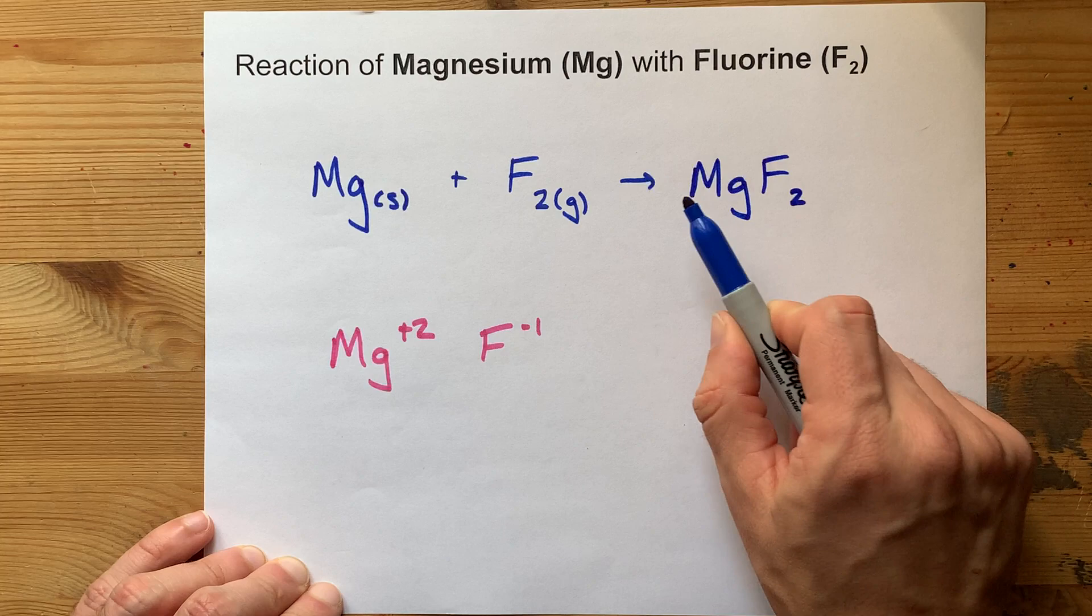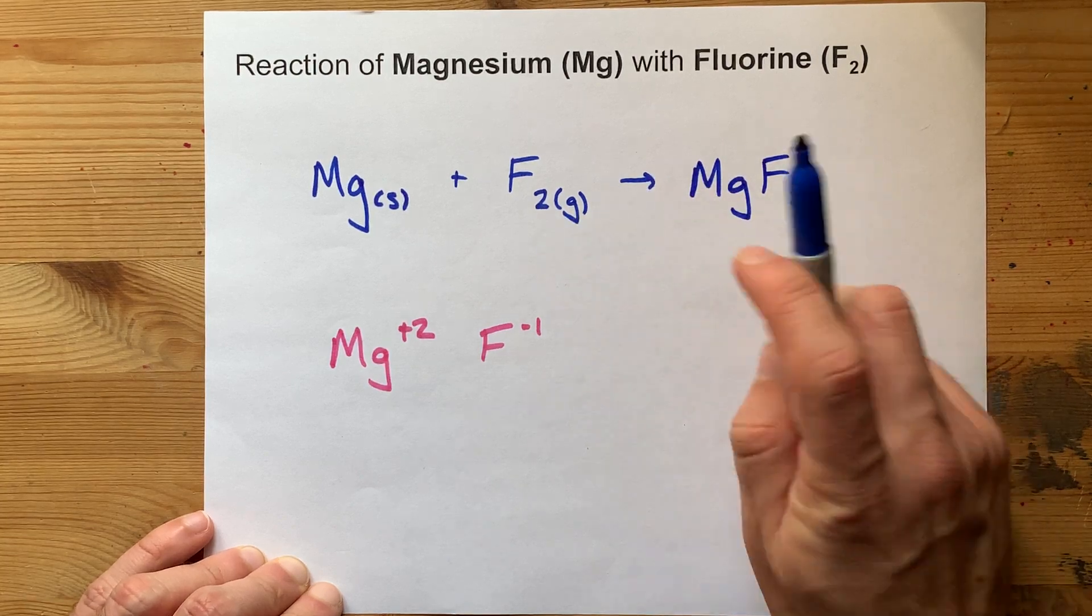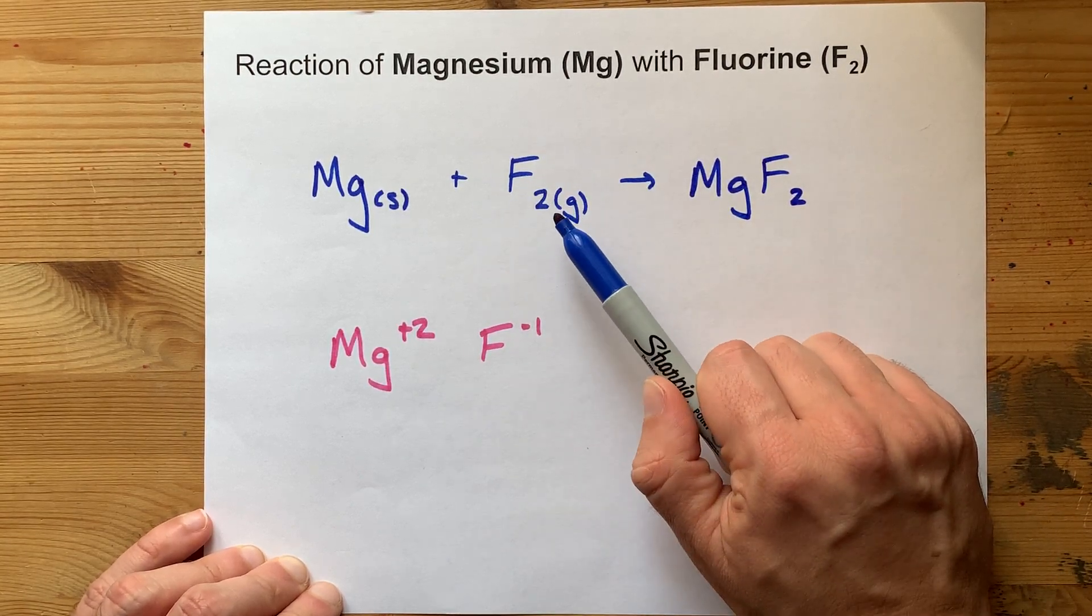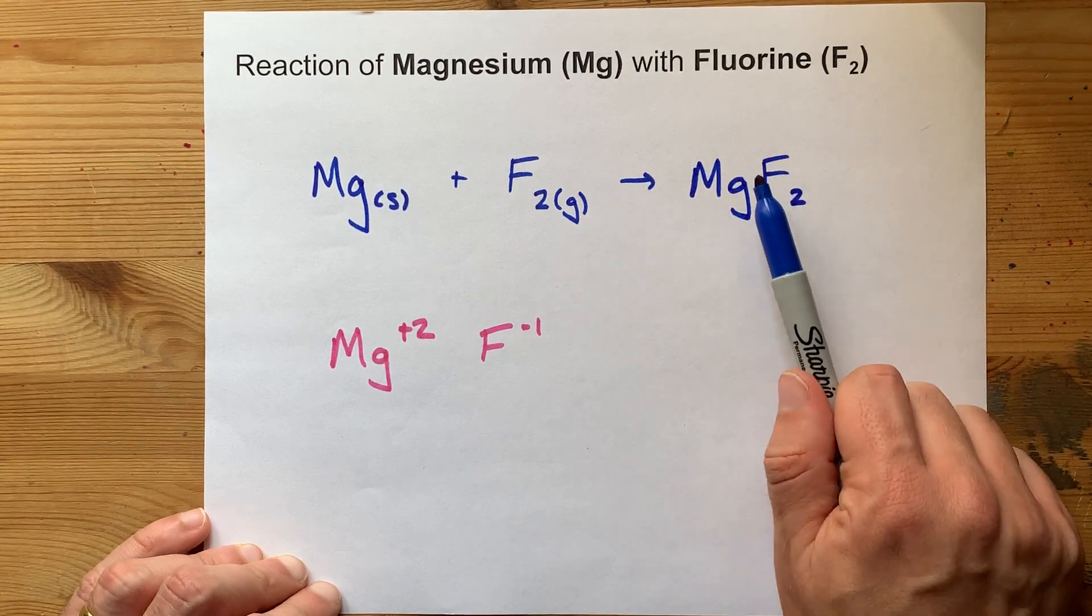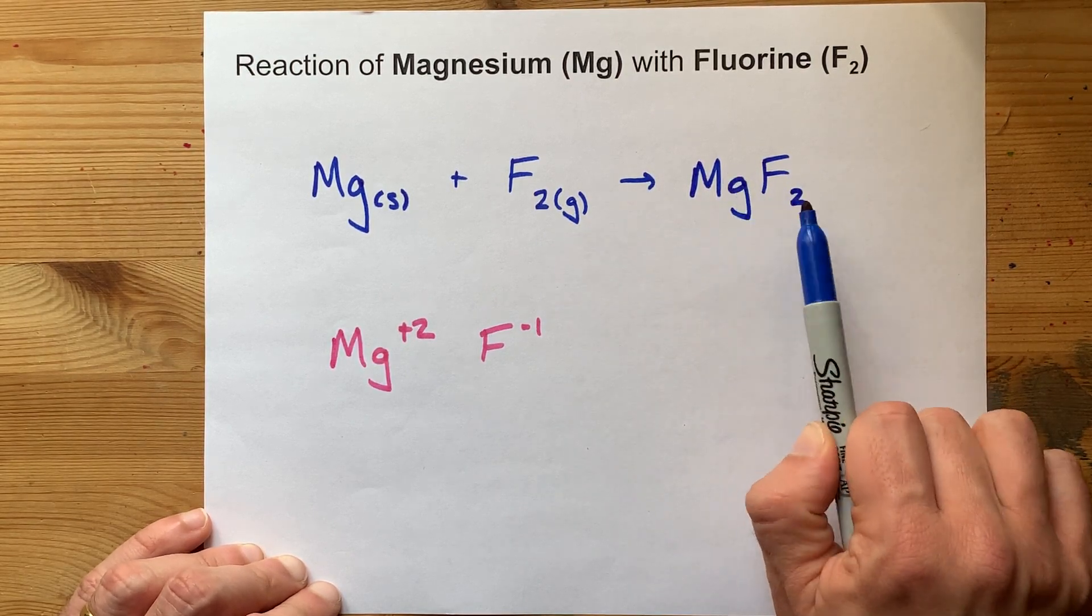Now, I don't want you thinking that that two is related to that two. It is not. This is just how fluorine presents itself in nature. And this two came from the charge on magnesium.